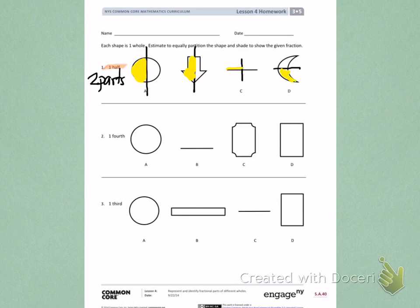Continue doing the same, looking at one-fourth and one-third, making sure you are estimating the best you can to partition each shape to give the certain fractional value.